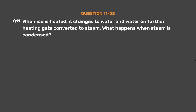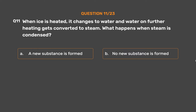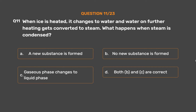Question number 11. When ice is heated, it changes to water and water on further heating gets converted to steam. What happens when steam is condensed? Option A: A new substance is formed. Option B: No new substance is formed. Option C: Gaseous phase changes to liquid phase. Option D: Both B and C are correct.